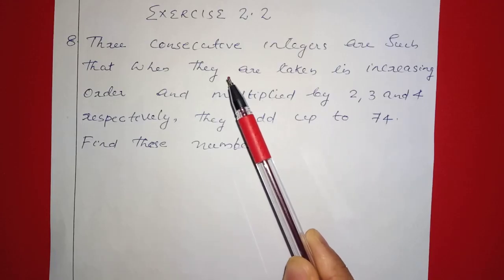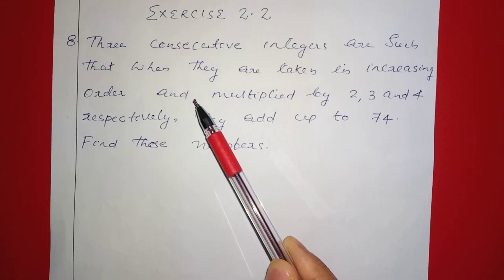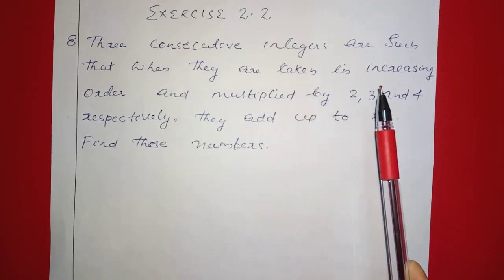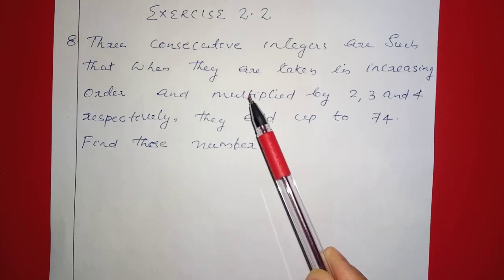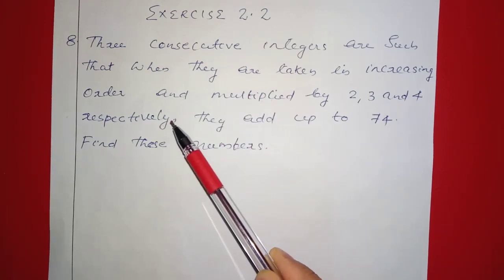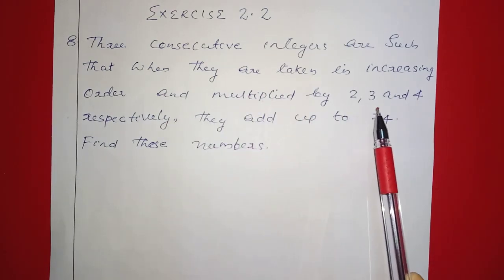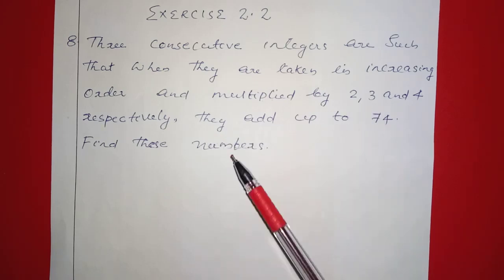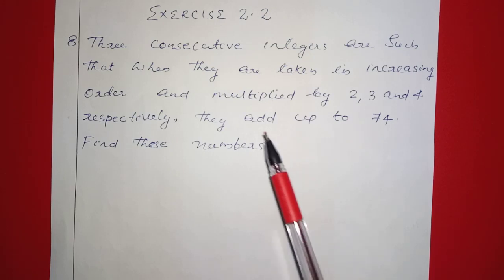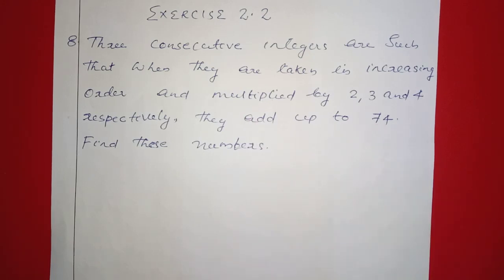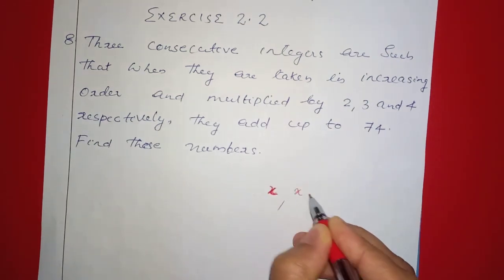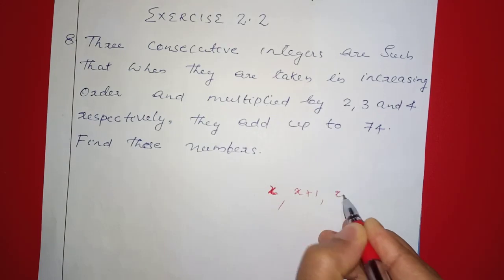In this chapter, in the second exercise, we have done the 7th question; this is the 8th question. Three consecutive integers are such that when they are taken in increasing order and multiplied by 2, 3, and 4 respectively, they add up to 74. Find these numbers. Let the three consecutive integers be x, x plus 1, and x plus 2.